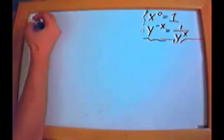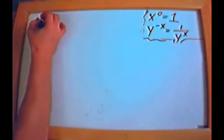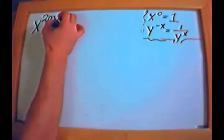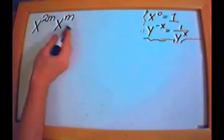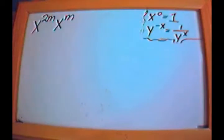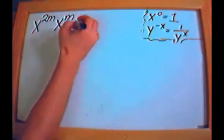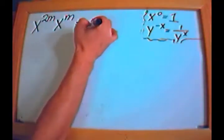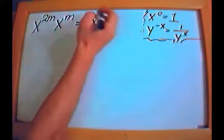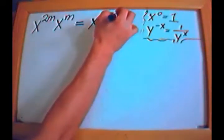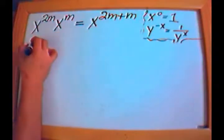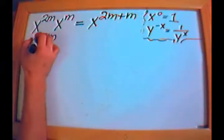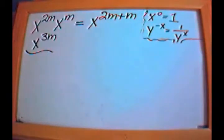Now problems with variable exponents. For x to the 2m times x to the m: same base, so add the exponents. 2m plus m is 3m, giving x to the 3m.